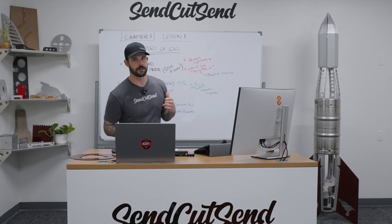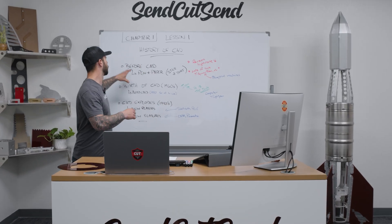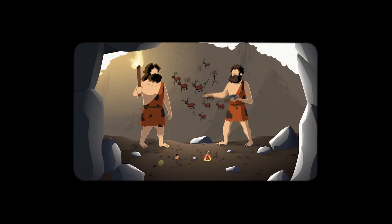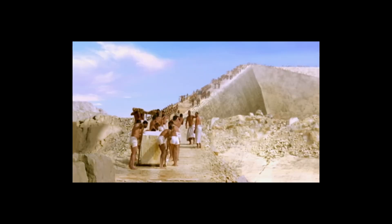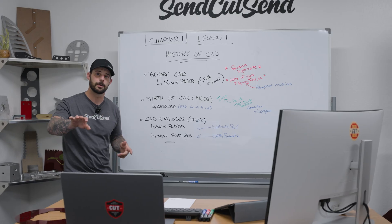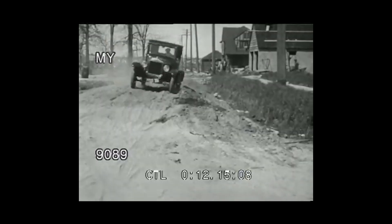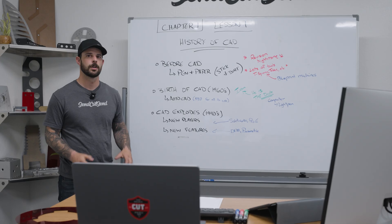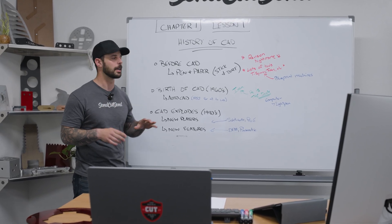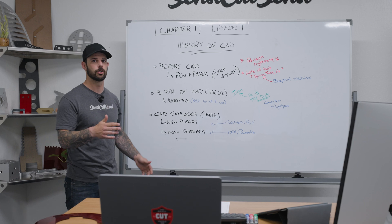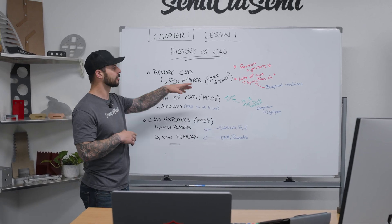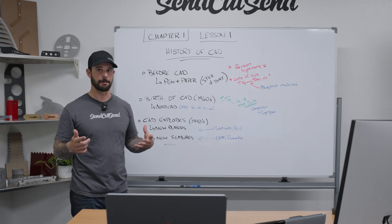Let's jump over to the whiteboard and go over what came before CAD. Before CAD it was sticks and dirt. We built things like the pyramids — or we like to think we did, there are a lot of ideas around that. But we did build airplanes and cars before computers and CAD existed. With pen and paper, there were a lot of issues. Revisions were a nightmare — if you messed up, you were starting all over again. There were tons of tools required, including blueprint machines if you wanted to make multiple copies.